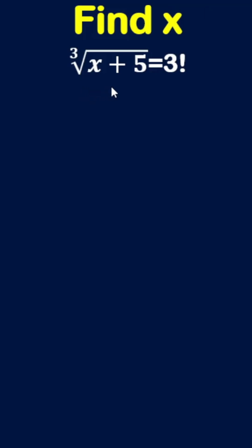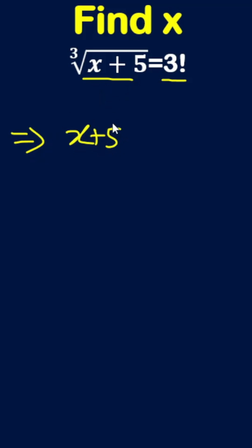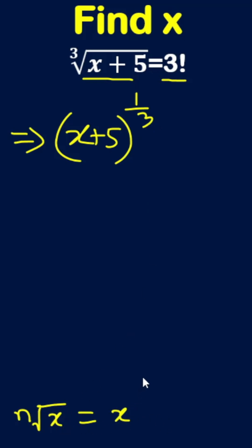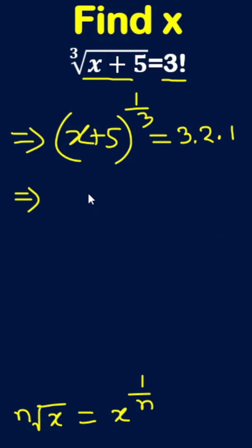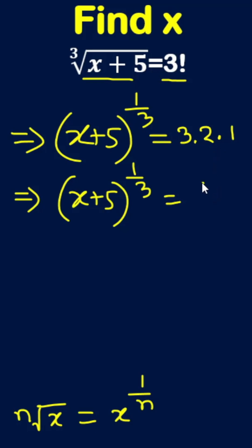Find x: cubic root of (x + 5) equals factorial 3. We can write x plus 5 to the power 1 by 3, because the nth root of x means x to the power 1 by n. Factorial 3 equals 3 times 2 times 1, so x plus 5 to the power 1 by 3 equals 6.